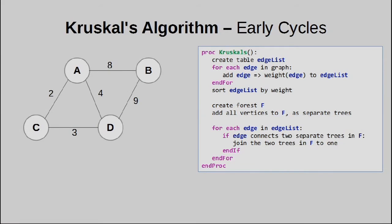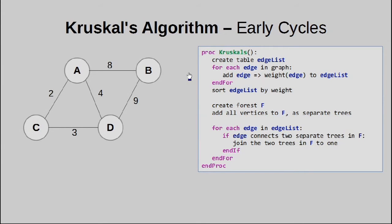So alright, let us prove to ourselves that a cycle can in fact occur early, before the algorithm is ready to terminate. So we trace this from the top again, by first creating our edge list. Obviously AC is fine, as is CD.